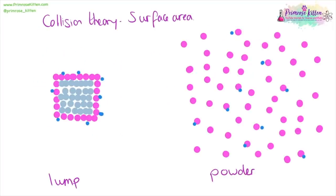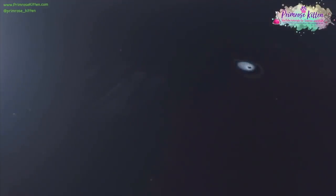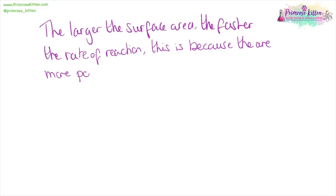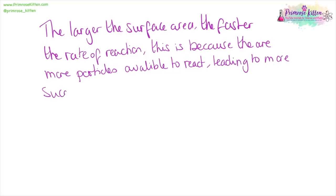When we have a lump of something, it has less surface area, so there's less space to react. The blue dots can only react to the pink dots on the outside. The purple dots on the inside are exactly the same thing, they're just not available to react. Whereas when the pink dots are all spread out in a powder format, they're all available to react. Assuming we have exactly the same mass, the powder has more surface area than the lump, so more particles are available to react. Here I have two identically sized blobs of glue — one I've spread out and one I've left as a blob. The one that's spread out, the one with a large surface area, dries much, much faster. We can say that the larger the surface area, the faster the rate of reaction, because there are more particles available to react, leading to more successful collisions.